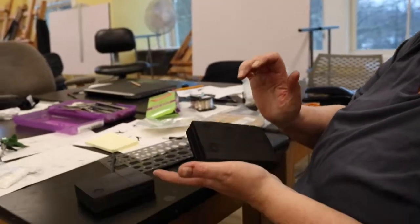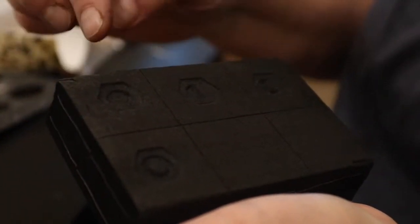Mark is making a phases of the moon bracelet and has carved each of these designs into the charcoal. We'll melt silver in there and then put this together into a bracelet.